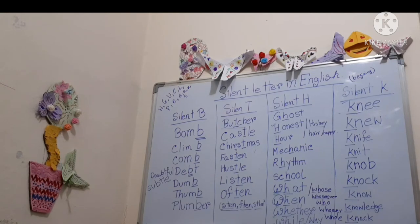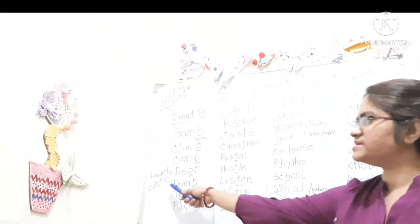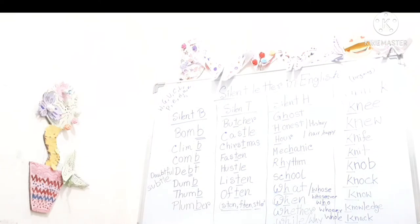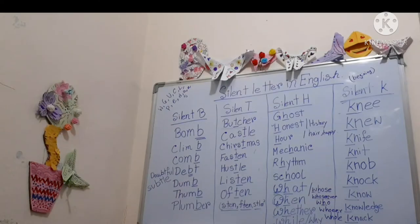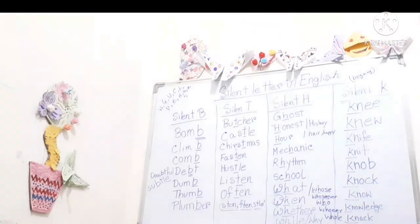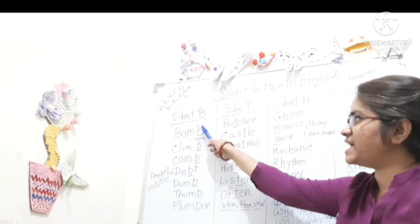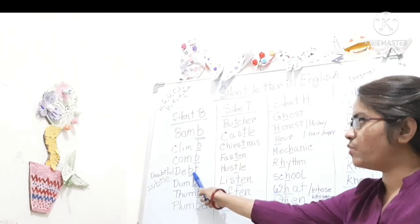Next one is some of the other examples also. I have written there doubtful, D-O-U-B-T. Doubtful? No, doubtful. Subtle. So this is the main rule. Whenever we are going to take silent B, that means after M, B is silent and before T, B is silent.